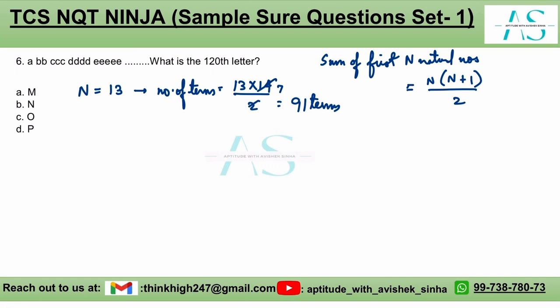We are close to 120 but I feel we can move a bit closer to 120. So again we'll use another value of n, let's say this time we use 14. So number of terms is 14 times 15 by 2. This is 7 times 15, which is 105 terms.